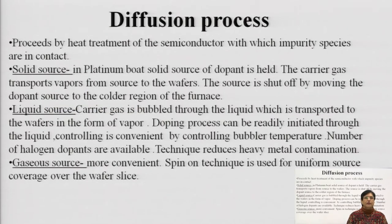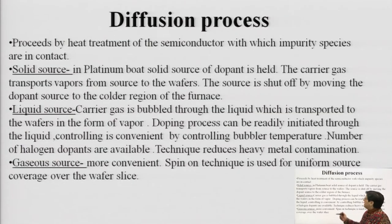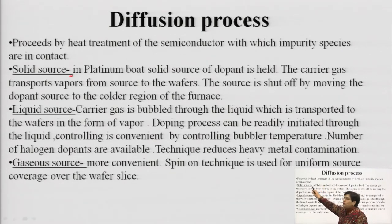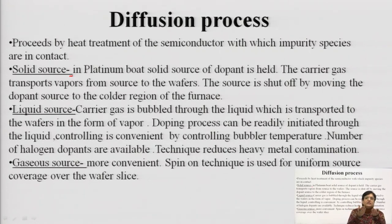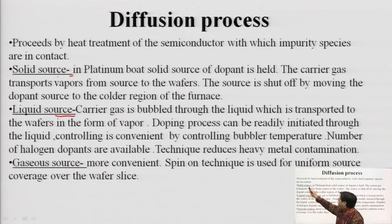The widely used furnace is basically the open tube furnace. All three processes — solid, liquid, and gaseous sources — can be used in an open tube system since only contact needs to be established between the dopant and the bulk. It can be established using a solid source, a liquid source, or a gaseous source.